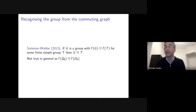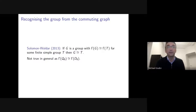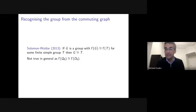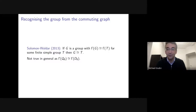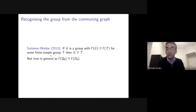One question is: can you recognize the group from its commuting graph? There's a nice result of Ron Solomon and Andrew Woldar from 2013 saying that if the commuting graph of G is isomorphic to the commuting graph of some finite simple group T, then G must be isomorphic to T itself — simple groups uniquely determine their commuting graphs. But this is not true in general, as shown by the Q₈ and D₈ example at the start: they are not isomorphic but have isomorphic commuting graphs.